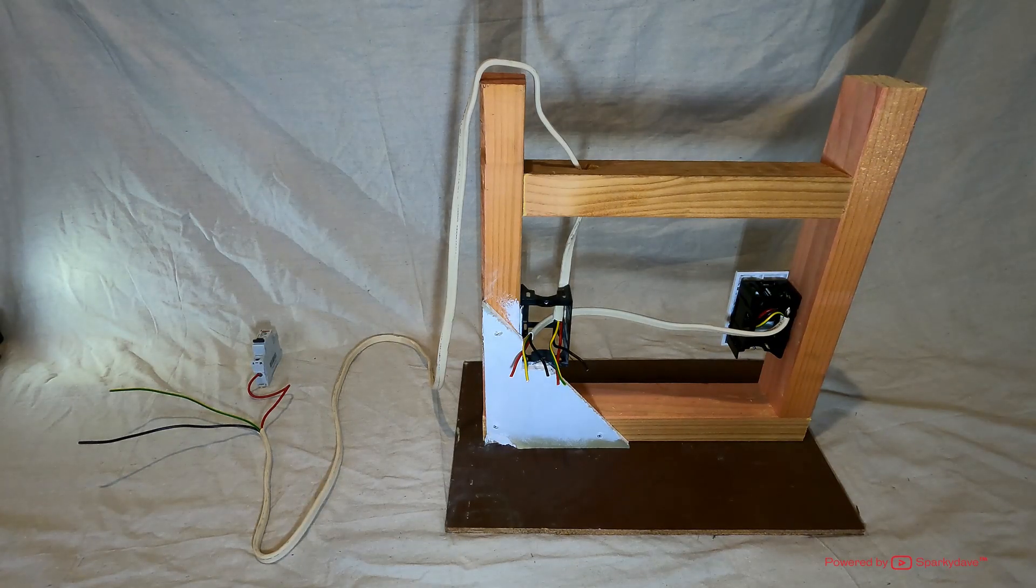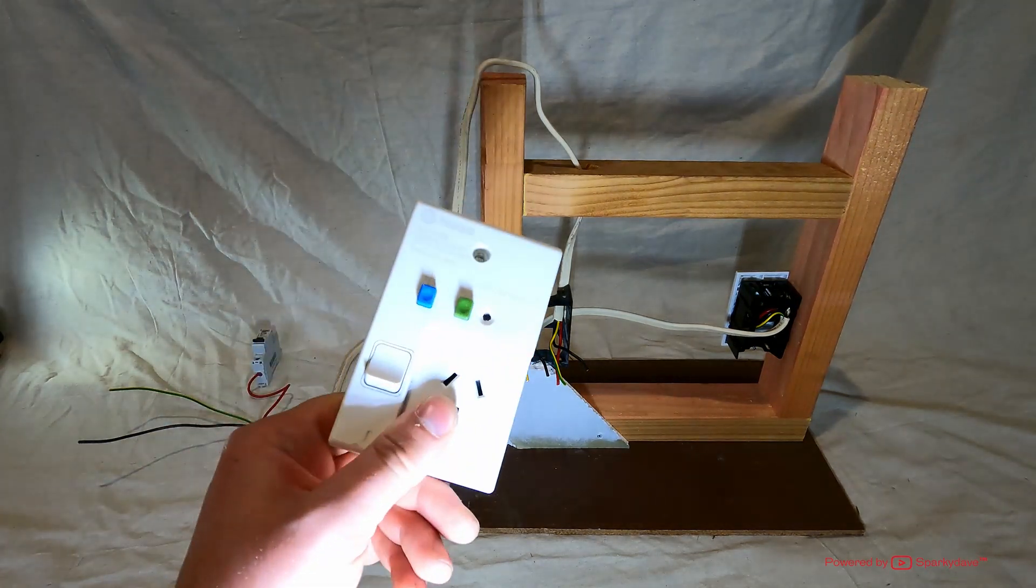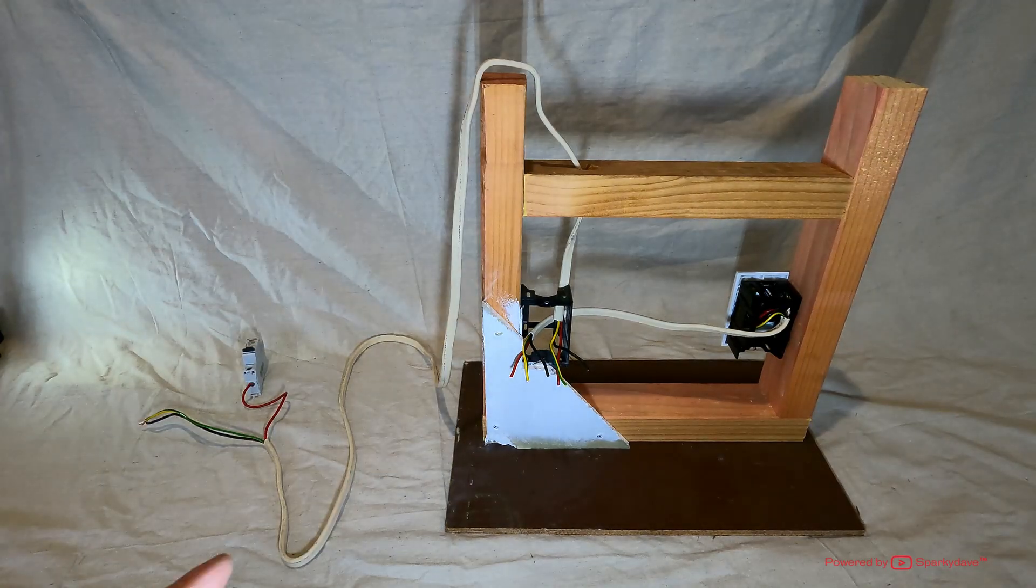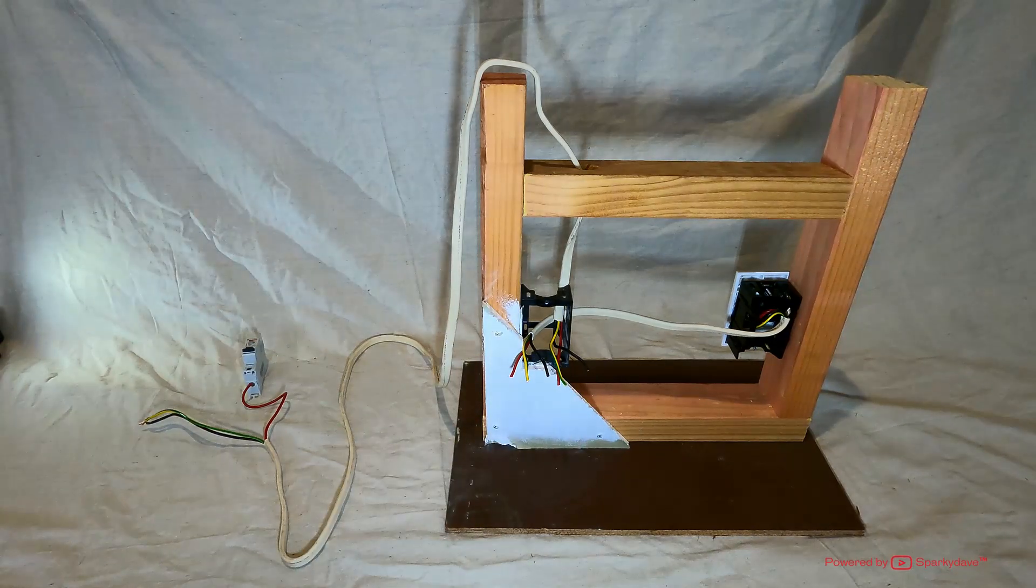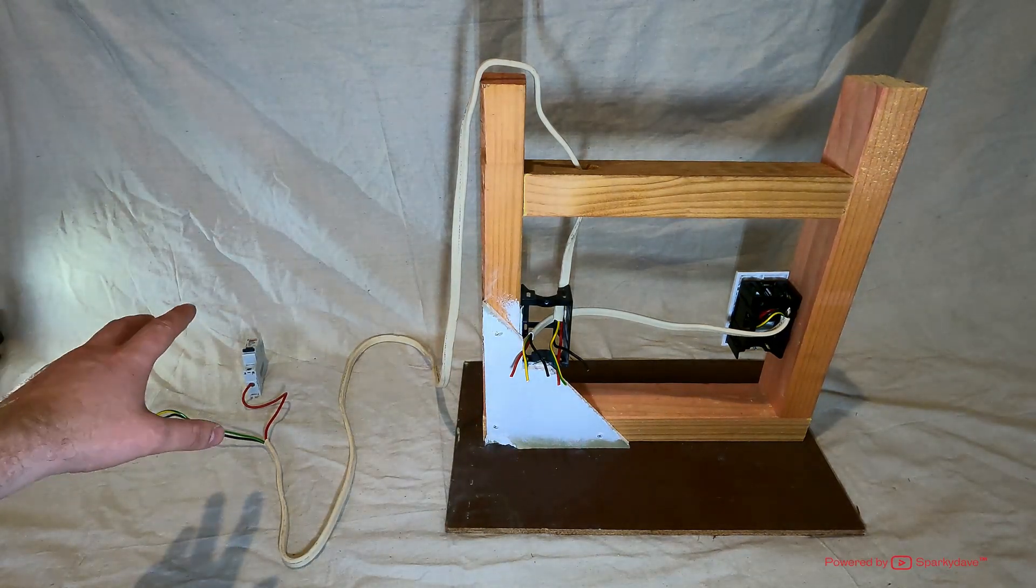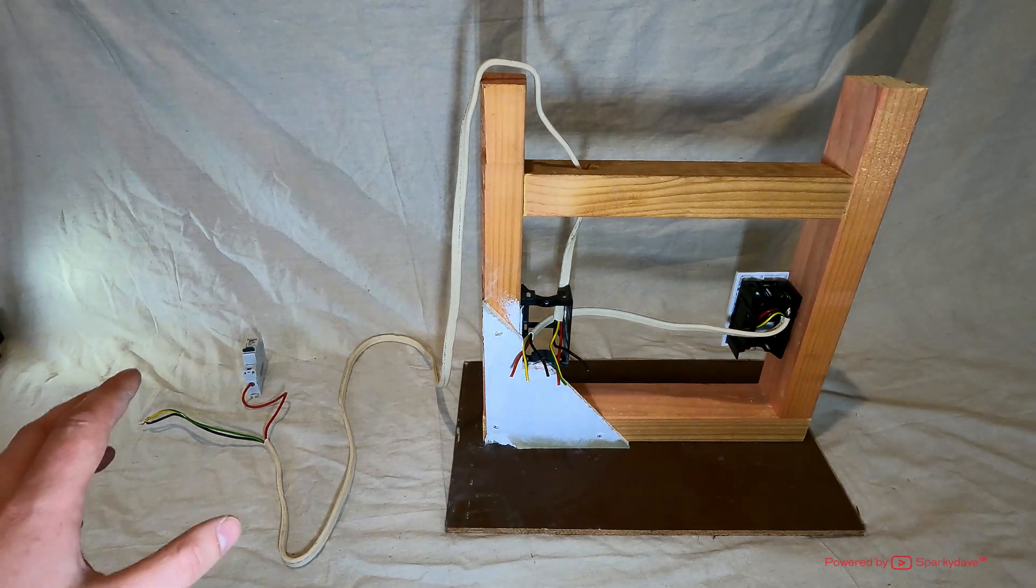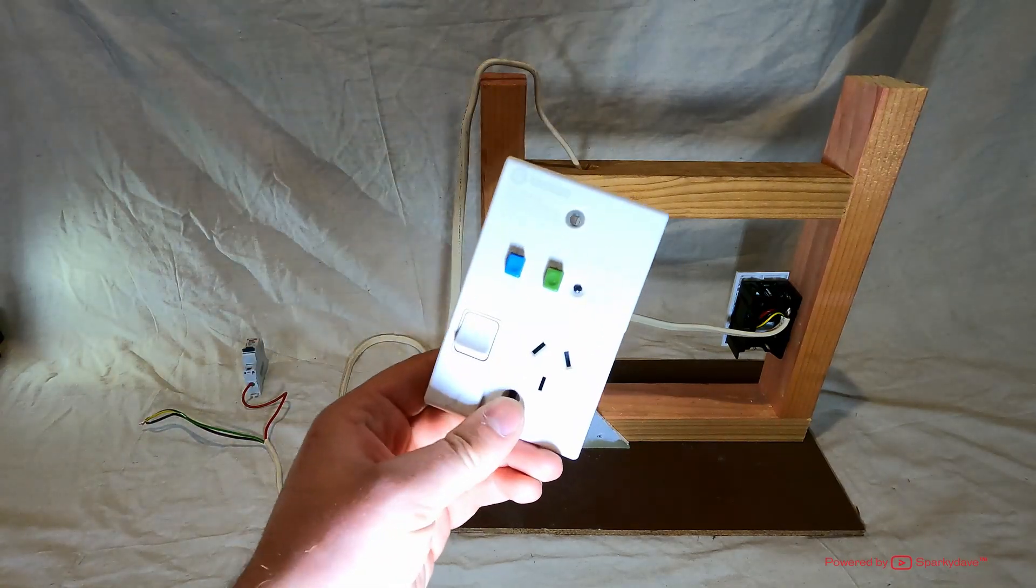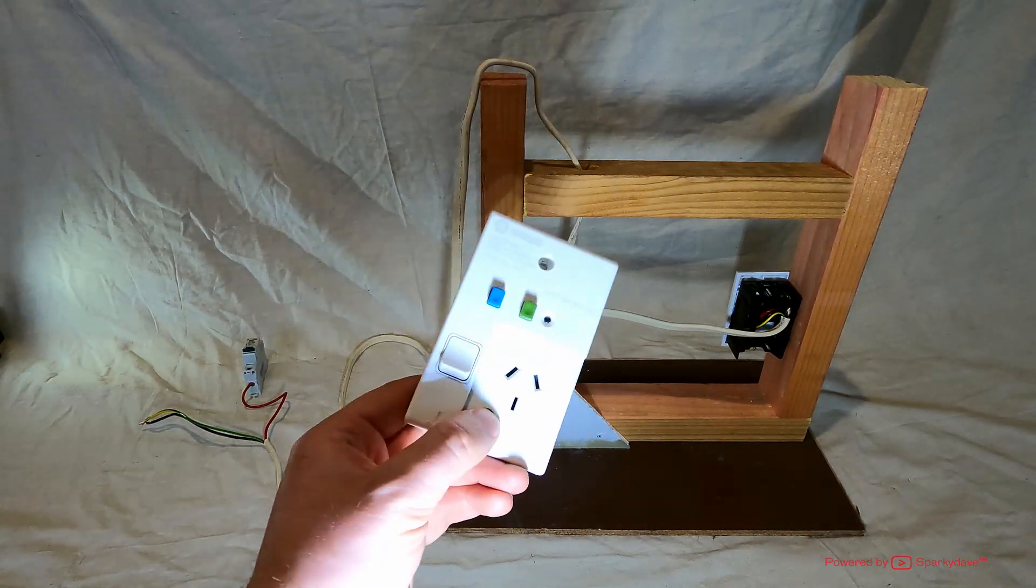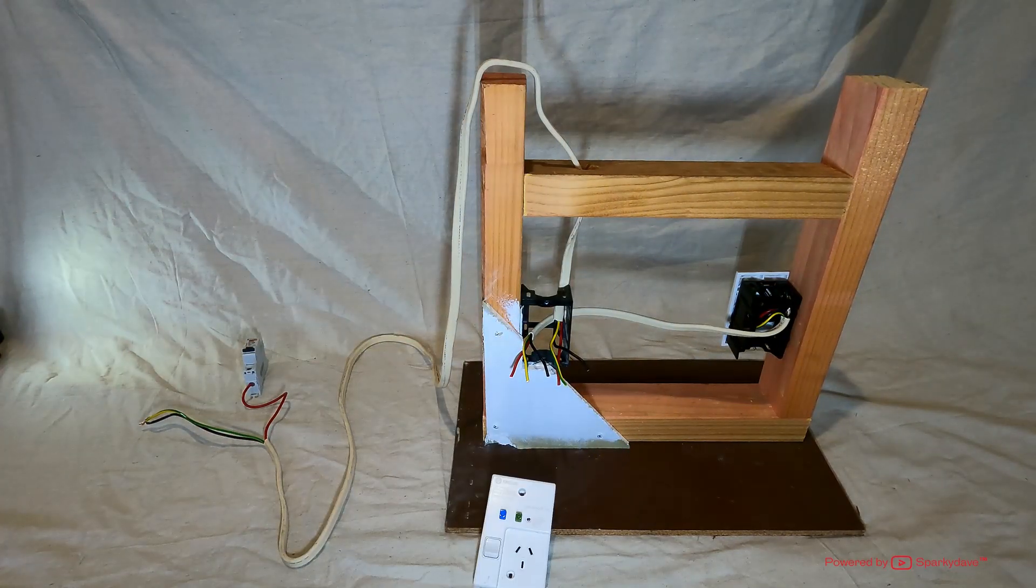G'day everyone, welcome to part 3 of socket circuit basics. Today we're going to be installing a socket RCD. Going back to part 2, we added a single socket off an existing socket outlet, assuming there was an RCD upstream in the switchboard. Today we'll be assuming there is no RCD in the switchboard, therefore we'll be installing an SRCD, or a socket outlet with an RCD built into it.